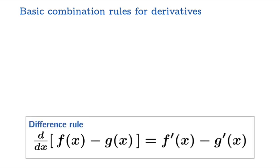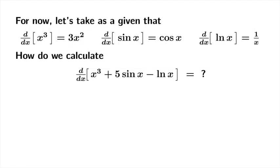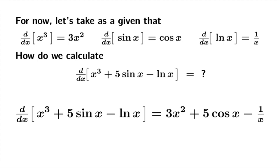So there are our three rules: the scalar multiple rule, the sum rule, and the difference rule. These rules are fundamental — you should be willing and able to use them all the time, as they'll make your calculations go much quicker. It's good to remember that these rules follow almost immediately from the analogous rules for limits. Now, going back to the original example: given the derivatives of x cubed, sin x, and ln x, the derivative of the combination is 3x squared plus 5 cos x minus 1 over x.